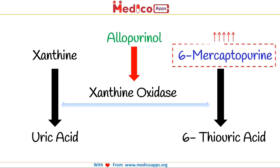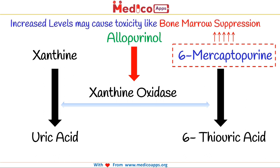This leads to an increase in the level of 6-mercaptopurine, and these increased levels may cause toxicity like bone marrow suppression. And hence, allopurinol and 6-mercaptopurine should never be co-administered.